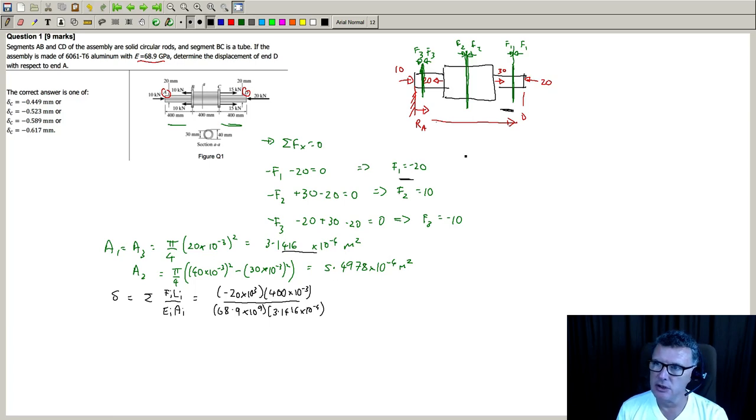Right, so now the next section. So we're now looking at F2 section there. That has an internal force - now you need to make sure that your pluses and minuses are kept, whatever way you decide to define them. You're going to keep the respective directions. So this we first had a minus number, so now we've got a positive number, so 10 times 10 to the power 3. And it has a length of 400 millimeters as well. We could have factored these, I suppose. And it has Young's modulus of 68.9 times 10 to the 9, and it has a cross-sectional area of 5.4978 times 10 to the minus 4.